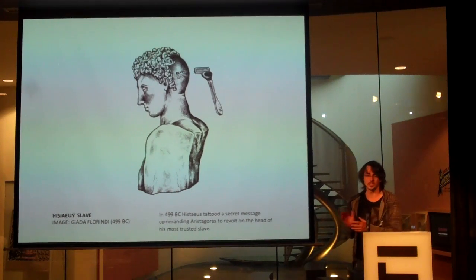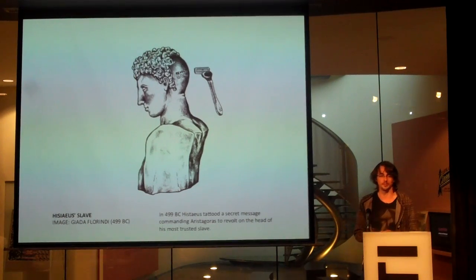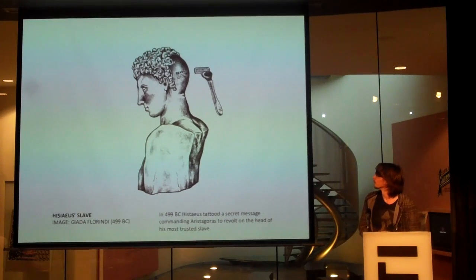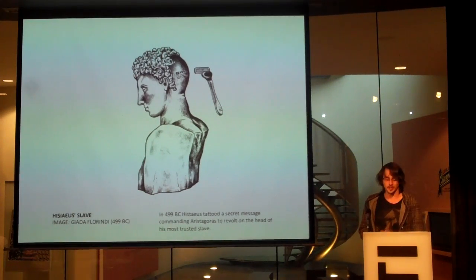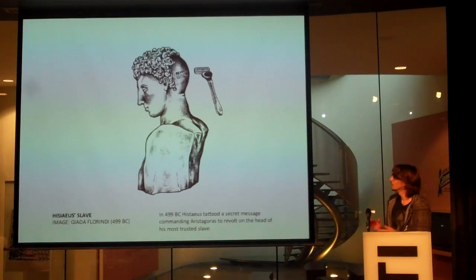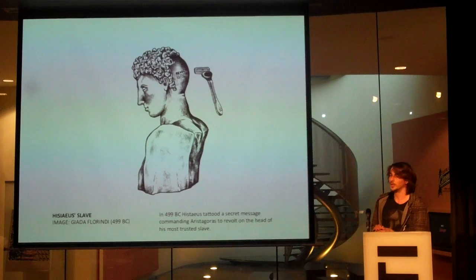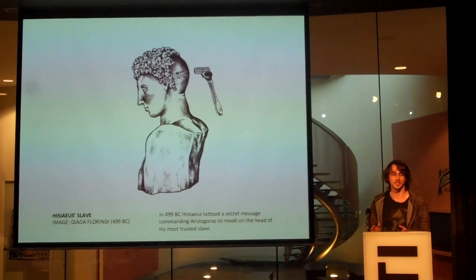This is an example of steganography — that's hiding a message inside something else. Here they shaved the head of a slave, wrote a message on his head and tattooed it, and when the hair had grown back, you couldn't see the message anymore.